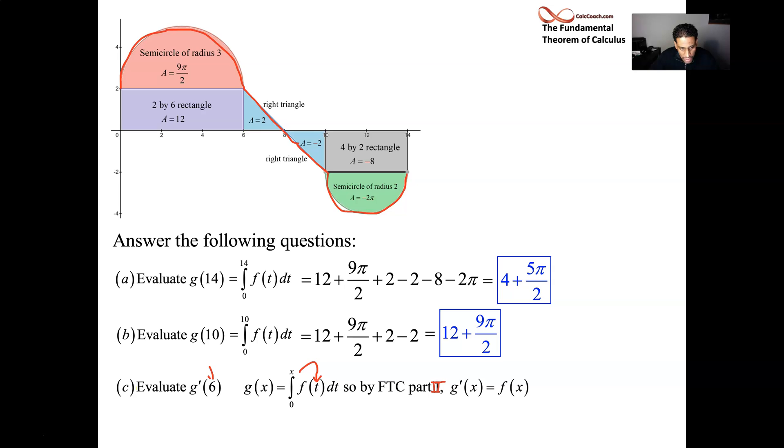Our job, plug a 6 in to g prime. Well, that's the same thing as plugging a 6 in to f. So we're going to plug a 6 into f. Now, here's a picture without the colored areas in there. And your job is to plug a 6 into f. When x is 6, you need the f function value. So you go up and see the y value when f is 6. And it turns out it's at that connection point between the first semicircle and the line. And the y value there is y equals 2. That's the answer to the third question.